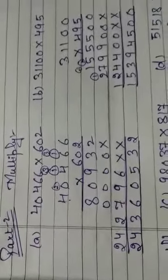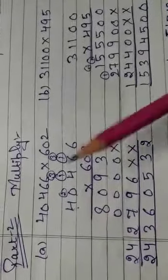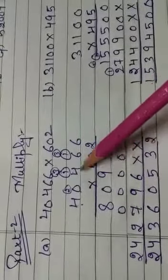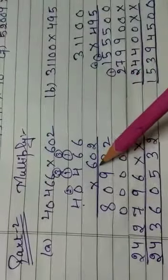Now Part 2. In Part 2, you have to multiply by 3 digits. Now, you have written the term 40,466 and 602.